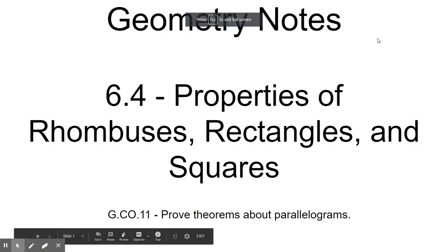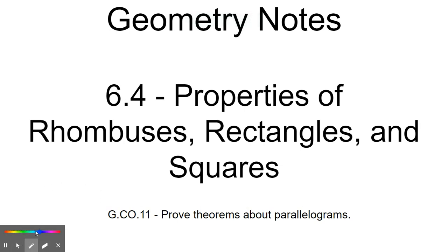All right, geometry. So 6-4, properties of rhombuses, rectangles, and squares. The one thing I want you to keep in mind is that rhombuses, rectangles, and squares are all parallelograms.